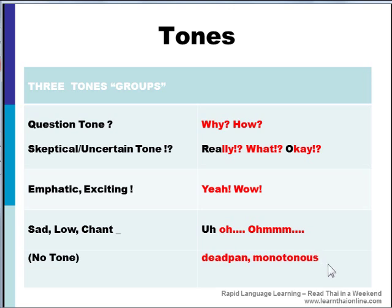There's actually another tone in Thai, but I call that the no-tone. It's simply when you speak in a deadpan or monotonous voice. So for instance, the word for drug or medicine in Thai is simply ya. Notice that these tones tend to be very level or flat, while the questioning tones and the exciting tones have a bit more of an energetic sound to them. The way to speak Thai with the correct tones is a kind of emotional rollercoaster.